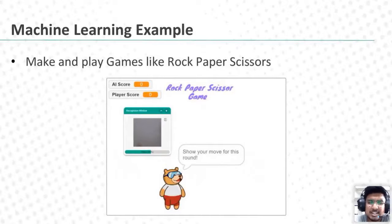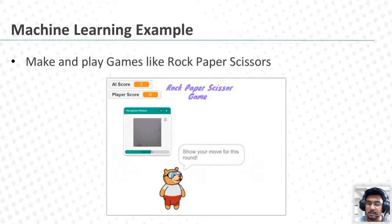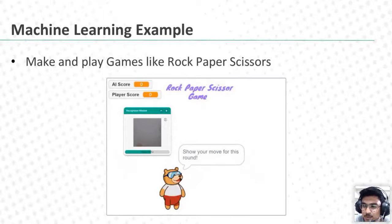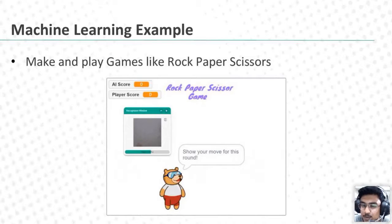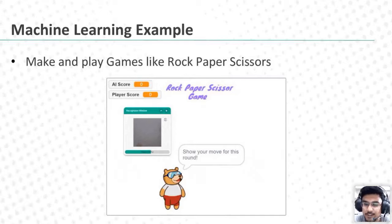With the help of machine learning, you can also make different games. It's not necessary to only classify animals. Here, for example, you can see the rock, paper, scissors game. With machine learning, you can make a game where you show your hand as the symbol of rock, paper, or scissors, and it will predict your move — whatever move you played — and accordingly the computer will play its own move and show you who is the winner.